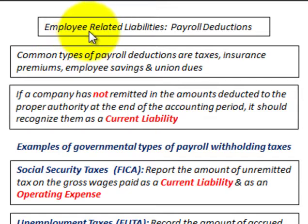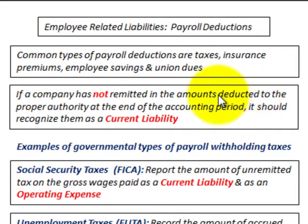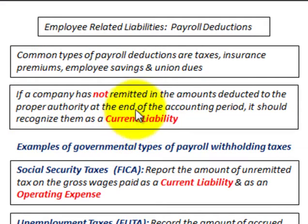We're going to be going through some employee-related liabilities, specifically payroll deductions. Common types of payroll deductions are taxes, insurance premiums, employee savings, and union dues. If a company has not remitted the amounts deducted to the proper authority at the end of the accounting period, it should recognize them as a current liability.